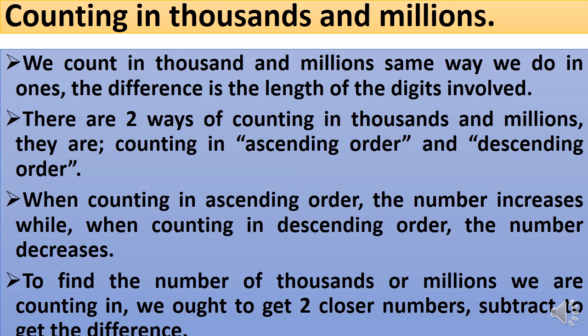Now we are looking at counting in thousands and millions. We count in thousands and millions the same way we do in ones. The difference is the length of the digits involved. When counting in ones, we have one digit. In tens, two digits. In hundreds, three digits. In thousands, we can have four, five, or six digits. In millions, we can have seven, eight, or nine digits. The difference is the digits involved and the pronunciation according to their value.